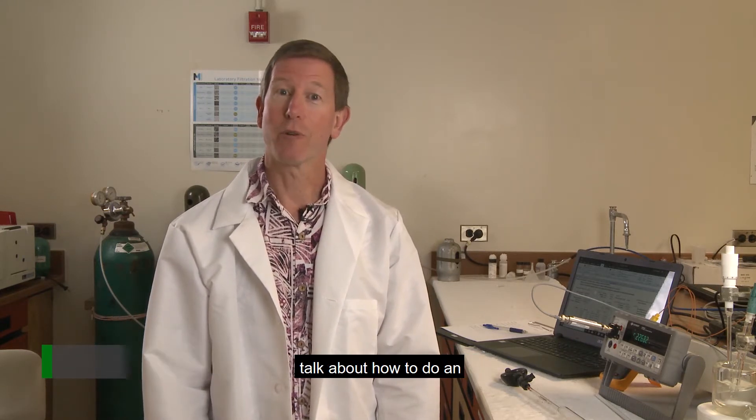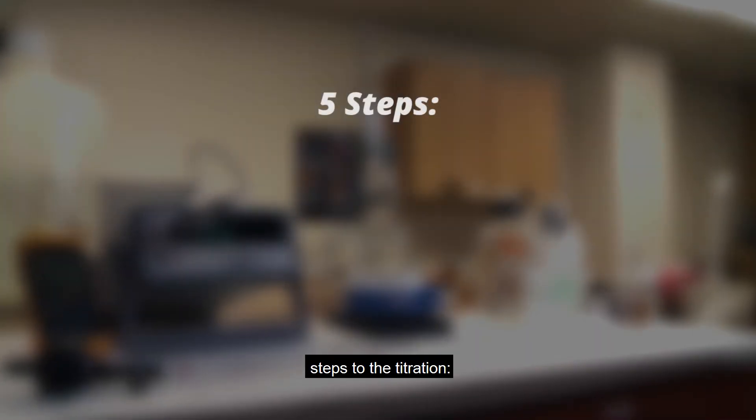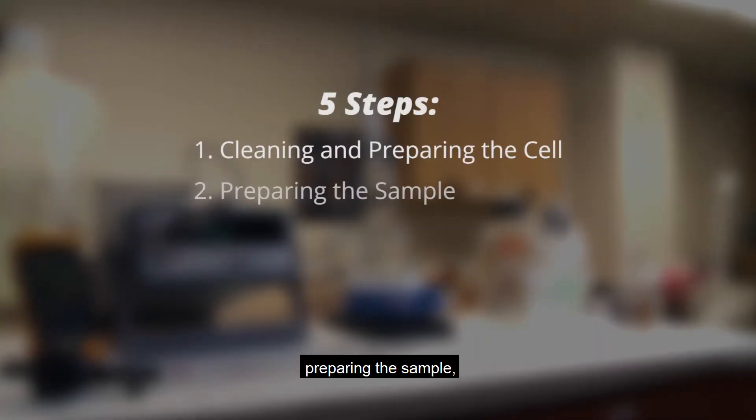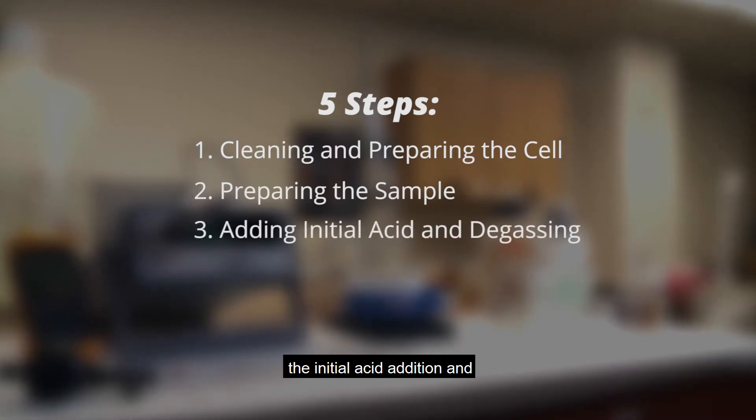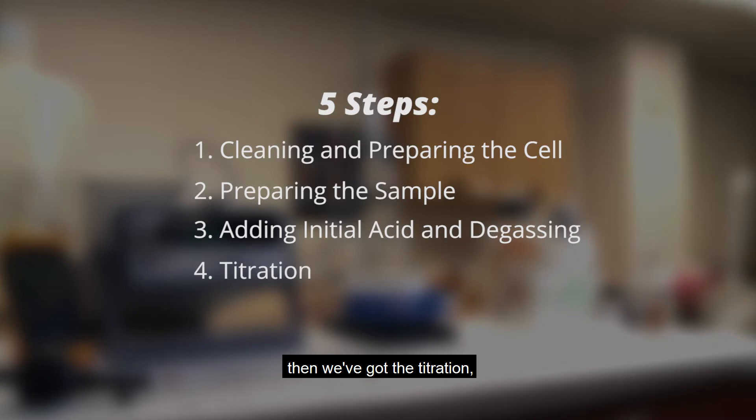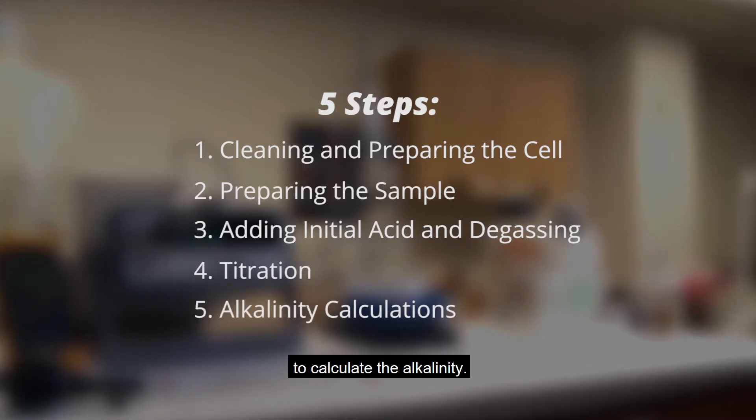And today we're going to talk about how to do an alkalinity titration. There are five basic steps to the titration: cleaning and preparing the cell, preparing the sample, the initial acid addition and degassing of the sample, then we've got the titration, and the last step would be doing the calculations to calculate the alkalinity.